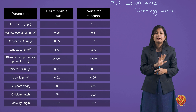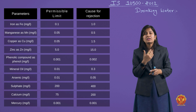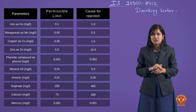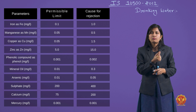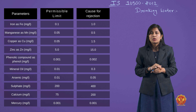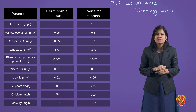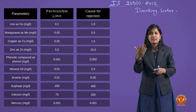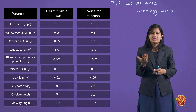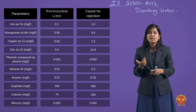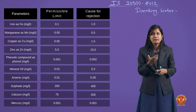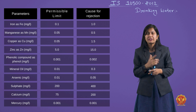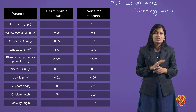Metals की बात करें — Iron की permissible limit 0.1 mg/L, cause of rejection 1 mg/L। Magnesium की permissible limit 0.05 mg/L, cause of rejection 0.5 mg/L। Copper की permissible limit 0.05 mg/L, cause of rejection 1.5 mg/L। Mineral oil और arsenic की भी limits होती हैं — arsenic की permissible limit 0.01 mg/L, cause of rejection 0.05 mg/L।